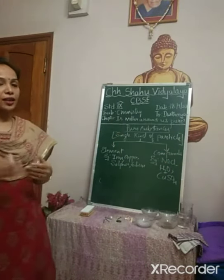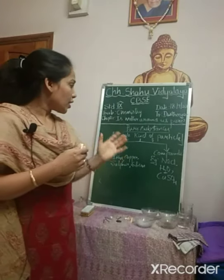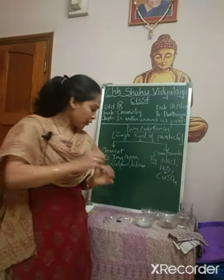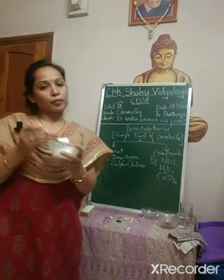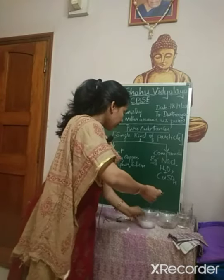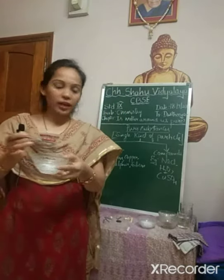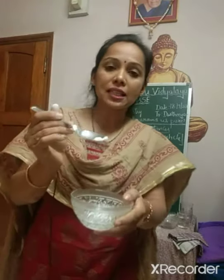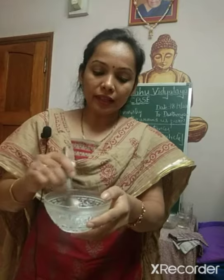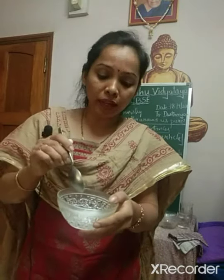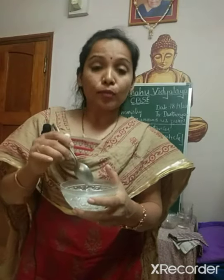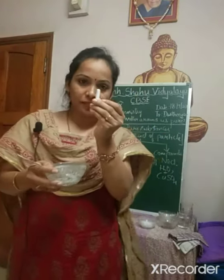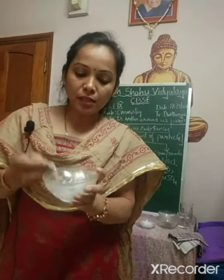Now based on this you can understand what we mean by mixtures. Mixtures are a combination of elements. For example, if I have sodium chloride here and I mix sodium chloride with calcium carbonate, it may be in any proportion — more of sodium chloride and less of calcium carbonate, or vice versa. Calcium carbonate comes from our own chalk; I just crushed the chalk and made powder. So now this becomes a mixture.